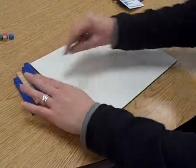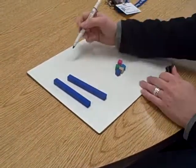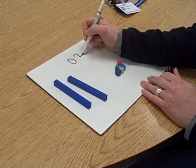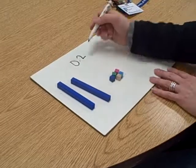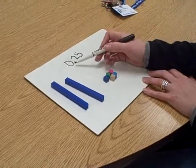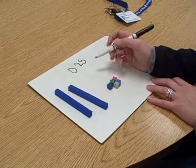If we've got this as our decimal, so these are our tenths, we've got one, two tenths, zero and two tenths, and one, two, three, four, five hundredths. So as a decimal, it says zero and twenty-five hundredths.